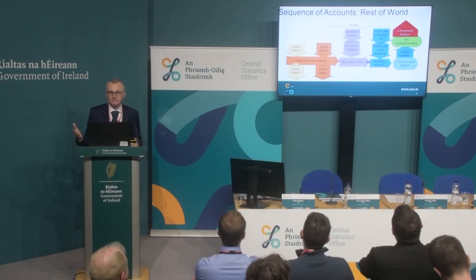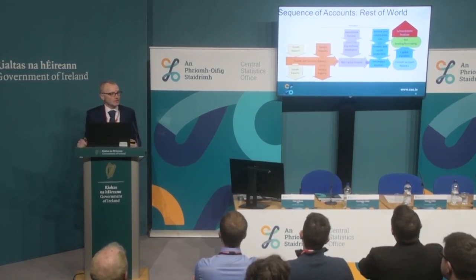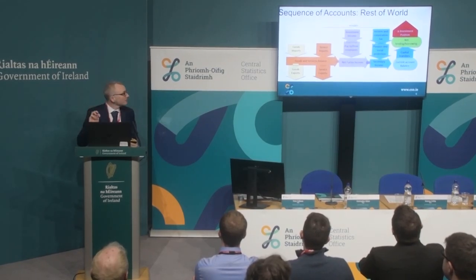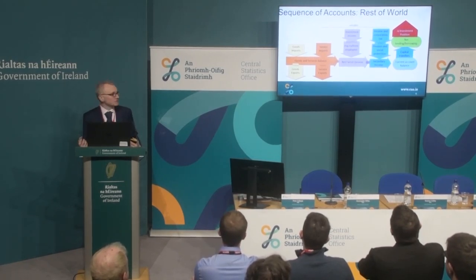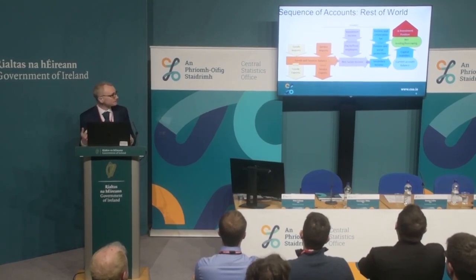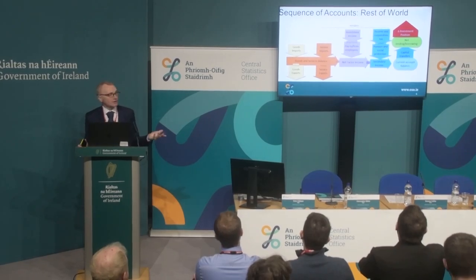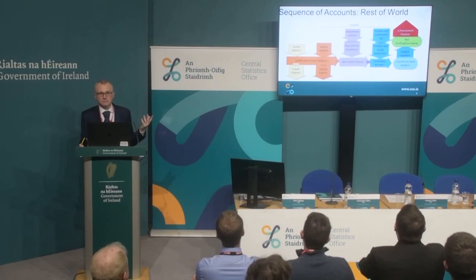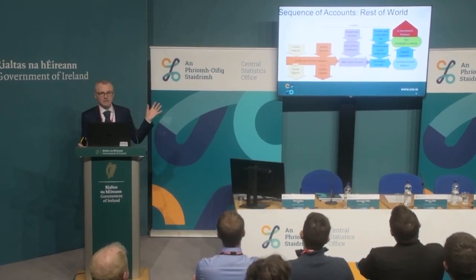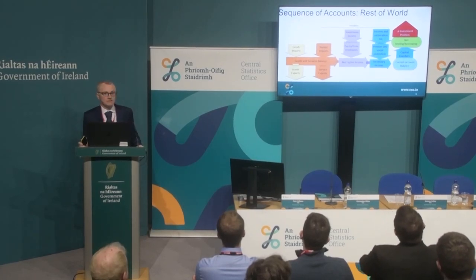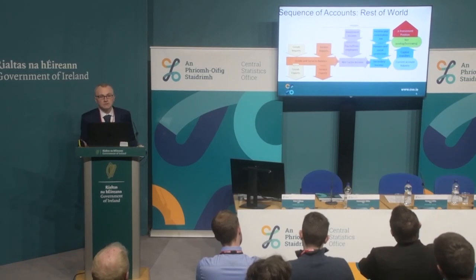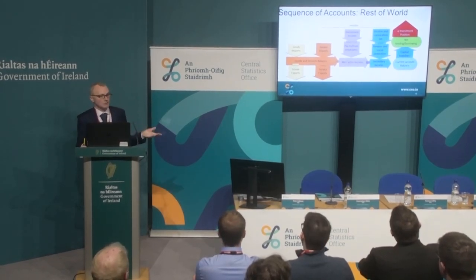The rest of the world account looks quite different because the rest of the world doesn't have any gross value added. The rest of the world account is just like the balance of payments flipped. So when we have goods imports, that's a positive for the rest of the world, and exports are negative. You take goods and services imports less exports, giving you your goods and services balance. Then your investment income — interest, dividends — and any cross-border workers gives you your net factor income. You add those two and any secondary income transfers: income and corporation tax paid across border, pension contributions and benefits paid across border, and our EU contributions. That gives you the current account balance. Then you adjust for any capital transfers going across border, and that gives you a net lending or borrowing for the rest of the world, which is the same with the opposite sign as the net lending borrowing of the domestic economy.